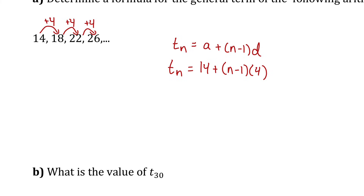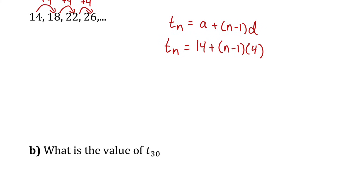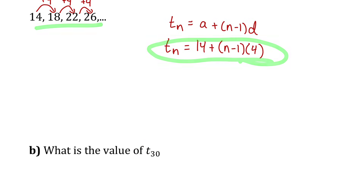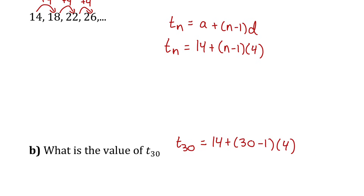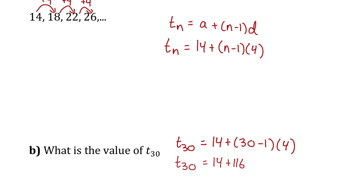Part B says to use this formula to find the value of the 30th term. Using this formula will be a lot faster than trying to list out 30 terms. For term 30, we substitute 30 for n: that gives us 29 times 4, which is 116. Adding that with 14, we get 130 as the 30th term in the sequence.